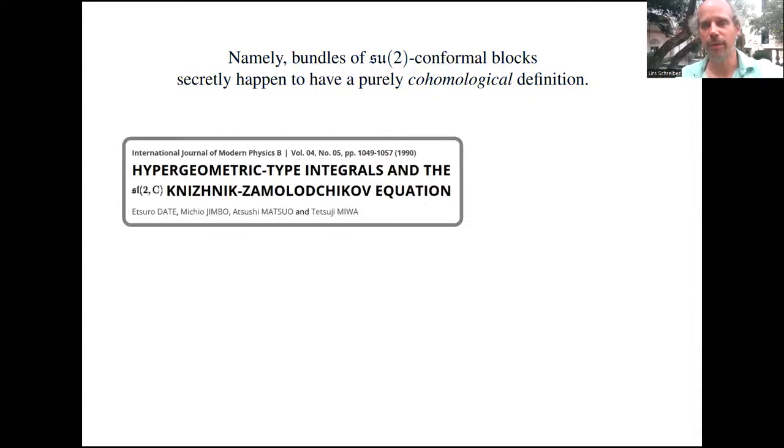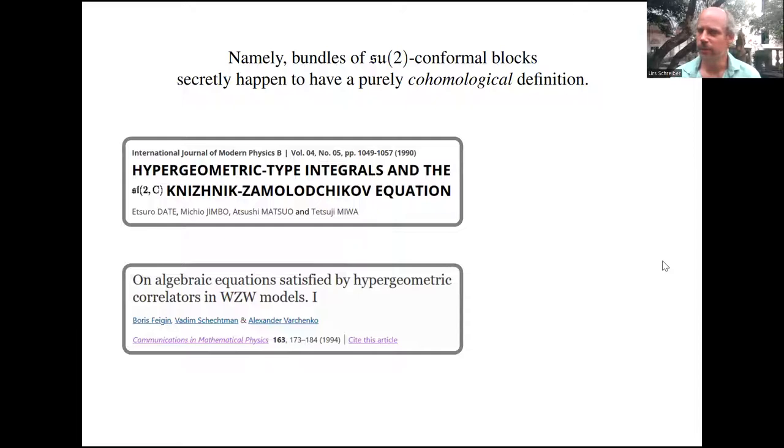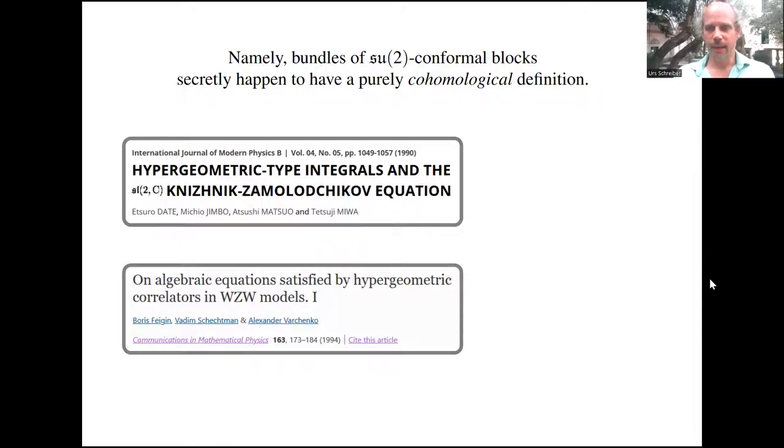Here's more indication of how this works. The key input is that these bundles of SU(2) conformal blocks have been realized decades back to have a completely cohomological definition, where cohomology is something naturally implemented in homotopy type theory. This goes back to insights by mathematical physicists from the early 1990s interested in understanding string theory, 2D conformal field theory. If one checks what these people actually proved, a good review is in these lecture notes, chapter 7.1, it has a very nice algebraic topological formulation.